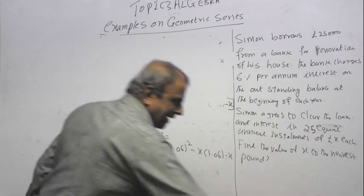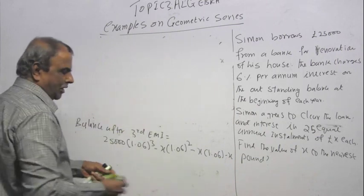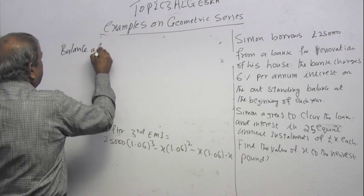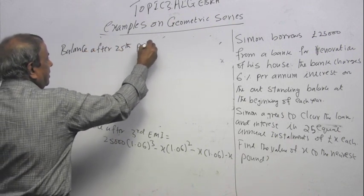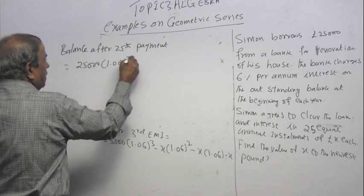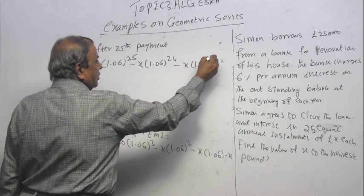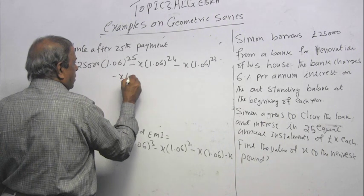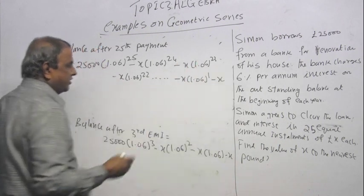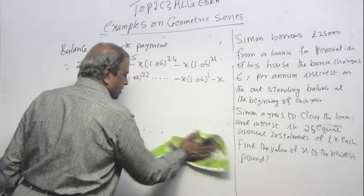Balance after 25th payment would be 25,000 times 1.06 power 25 minus X times 1.06 power 24 minus X times 1.06 power 23 minus X times 1.06 power 22 minus X times 1.06 power 1 minus X. That is the amount you owe. My job is to find X.